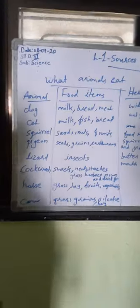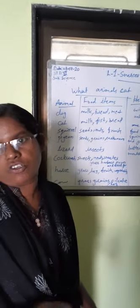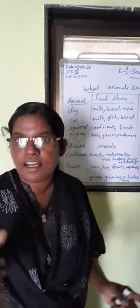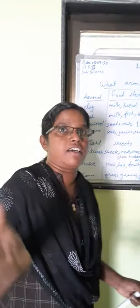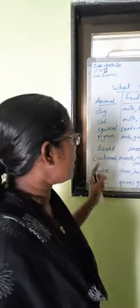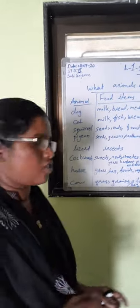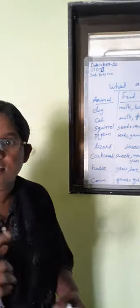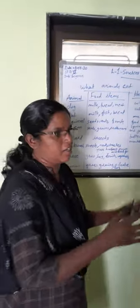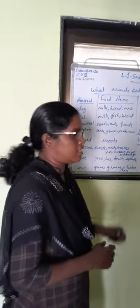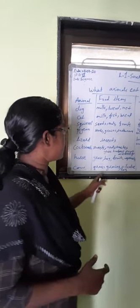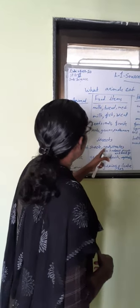Next one, pigeon. Pigeon also eats seeds, grains, and earthworms. Next one, lizard. Have you seen a lizard? Every house also has a house lizard. Lizards eat insects only. Next one, cockroach. Cockroach is eating sweets. Sheep is eating grass — that is what sheep eat.